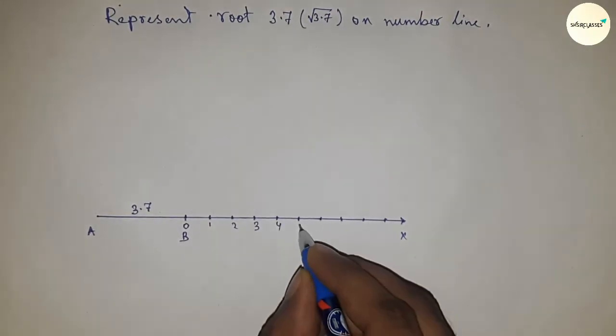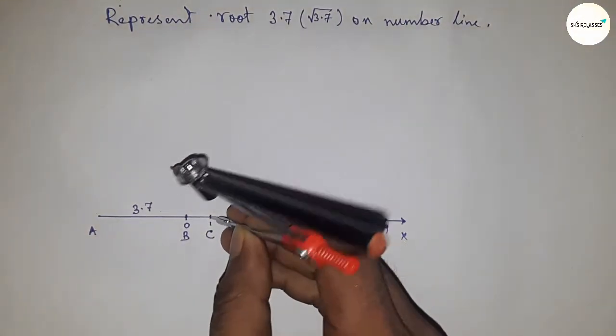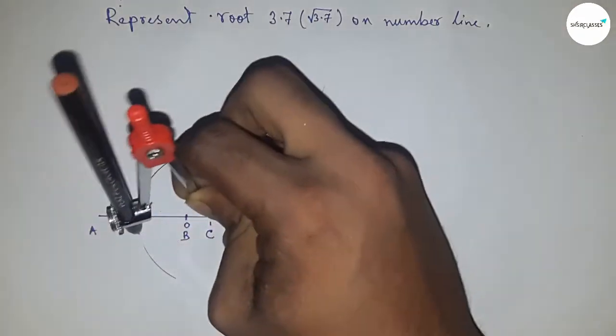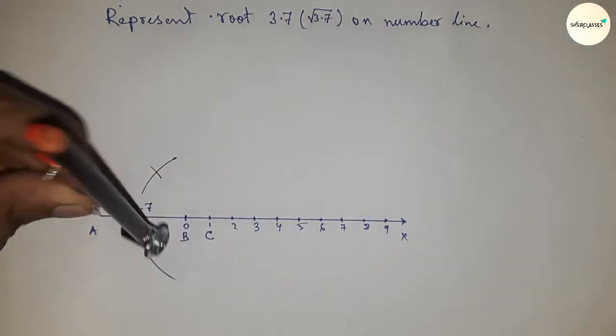Next, having to bisect the line AC. So taking greater than half of AC and drawing arcs by this way. Next, joining this and which meet at a point O.